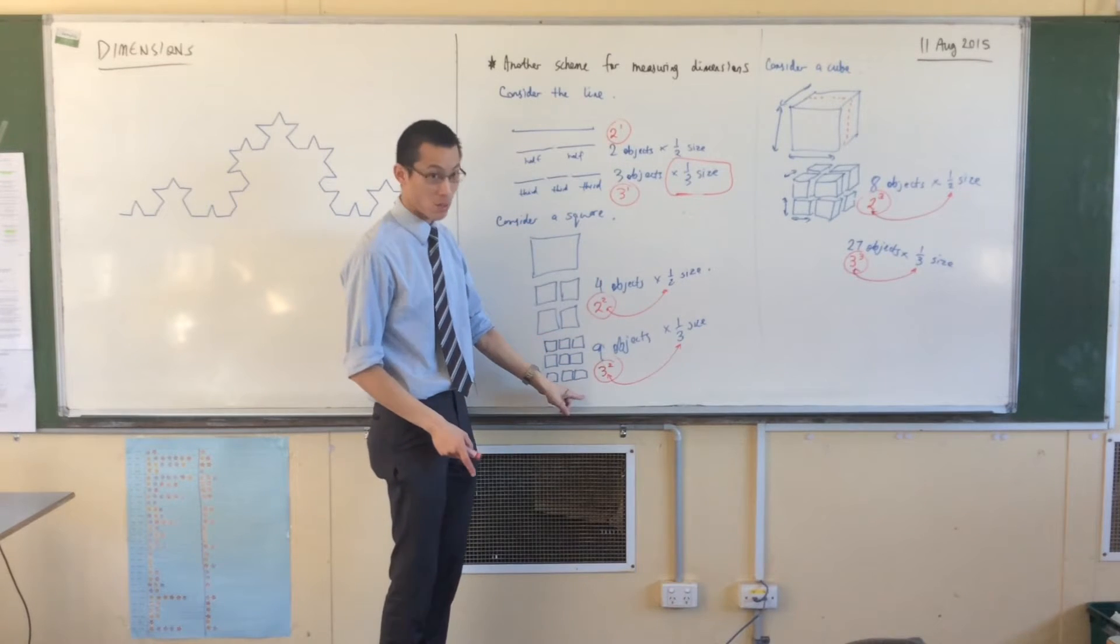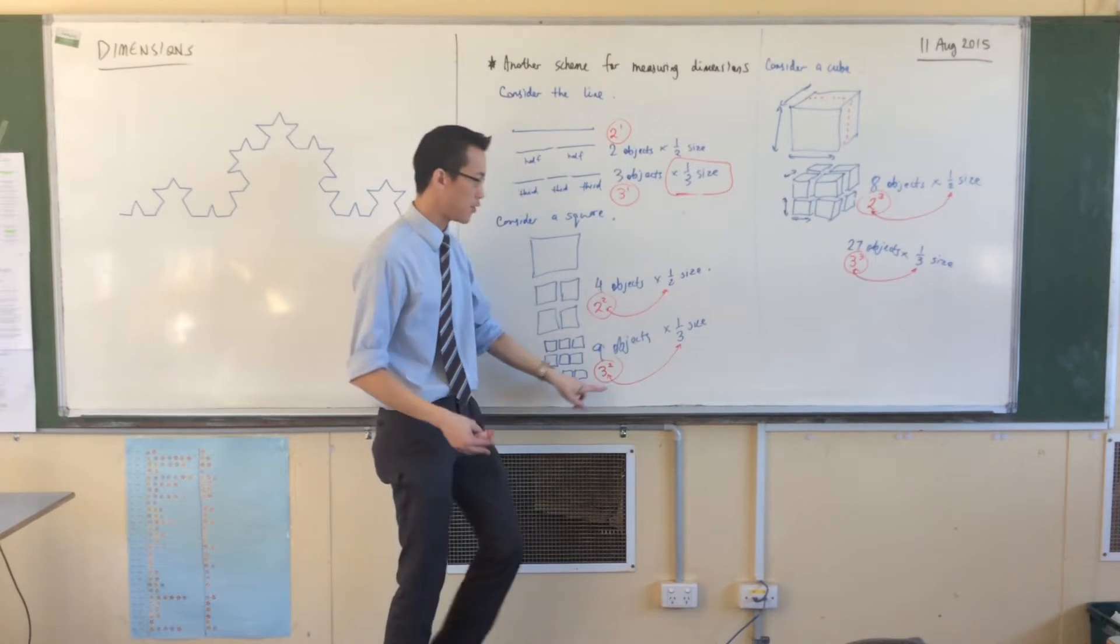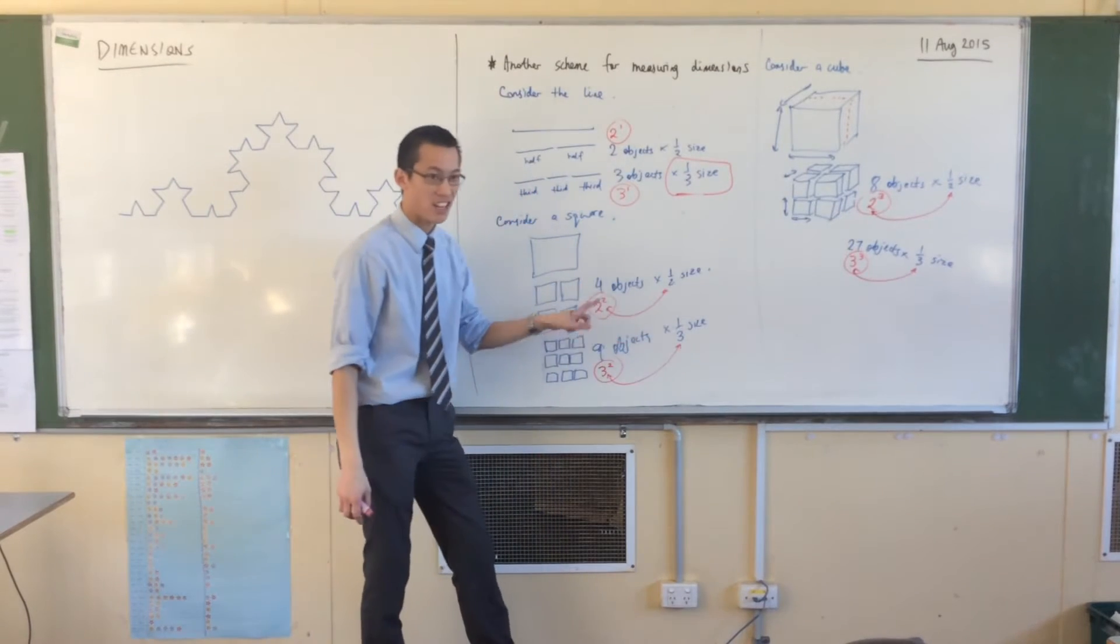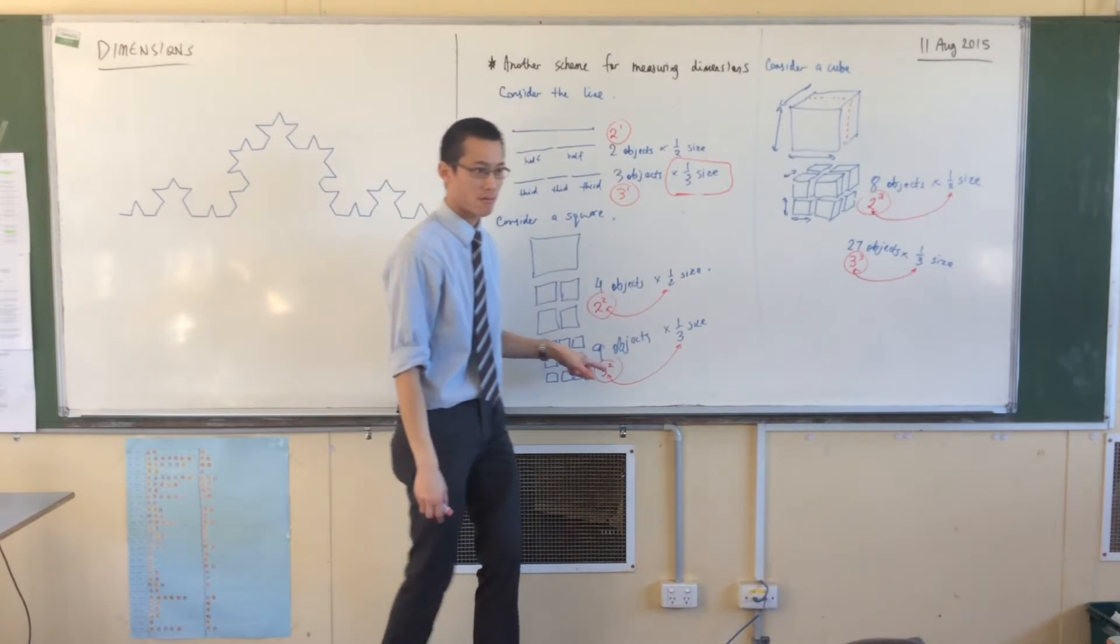If, on the other hand, I took a square, a two-dimensional object, if you divide it into a third chunk, you should get nine of them. Right? Okay, watch. We actually did this before.